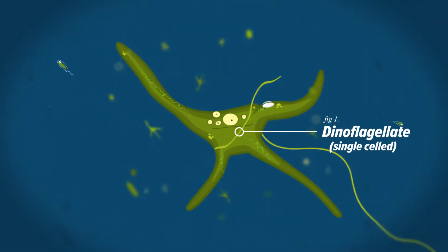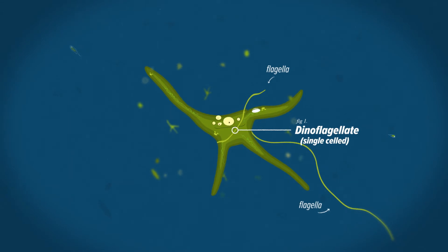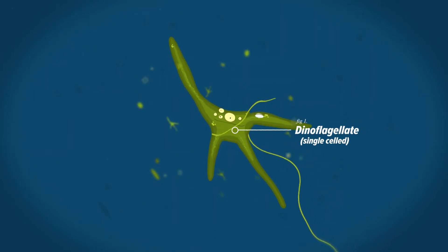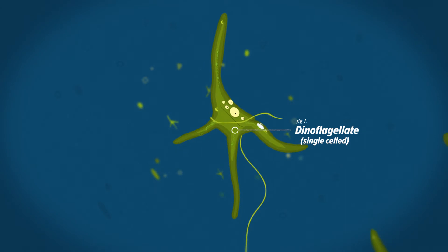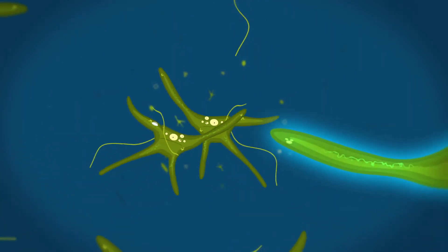Dinoflagellates are single-celled. They have two flagella, which are long hair-like structures that spin around while moving. Some dinoflagellates emit a blue fluorescent light.